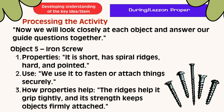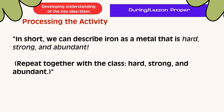Object 5: The iron screw. Properties: it is short, has spiral ridges, hard, and pointed. We use it to fasten or attach things securely. The ridges help it grip tightly, and its strength keeps objects firmly attached. In short, we can describe iron as a metal that is hard, strong, and abundant.